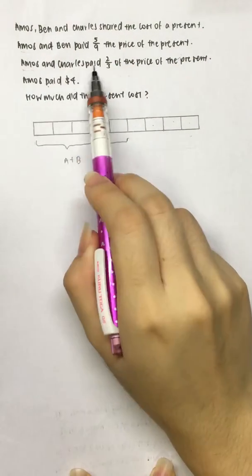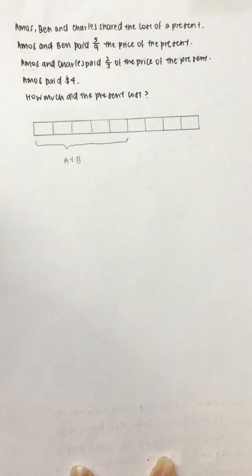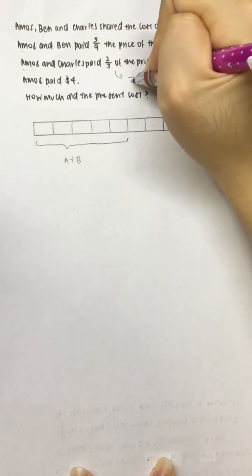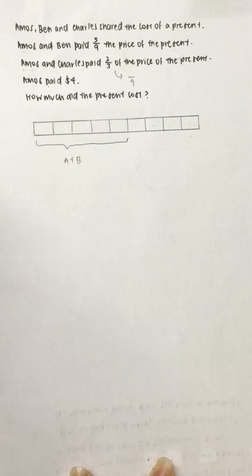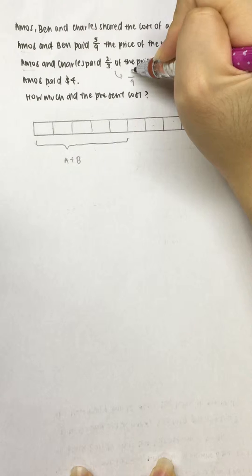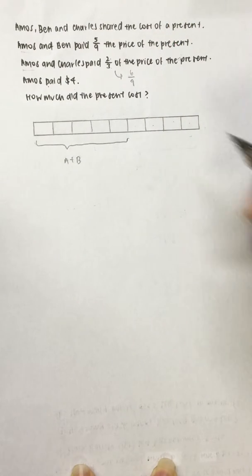Amos and Charles paid 2/3 of the price of the present. We convert this fraction to a denominator of 9 by multiplying both numerator and denominator by 3. So that gives you 6/9.